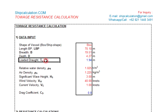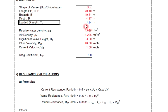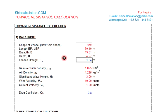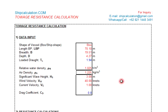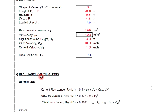The loaded draft depends on your loading condition, so you can change this value. The relative water density — for sea water — is 1.025 tons per cubic meter. Air density is 1.225 kilograms per cubic meter. The significant wave height is 3 meters.